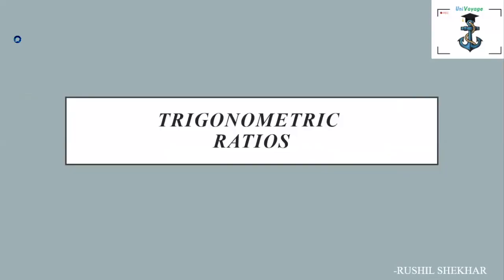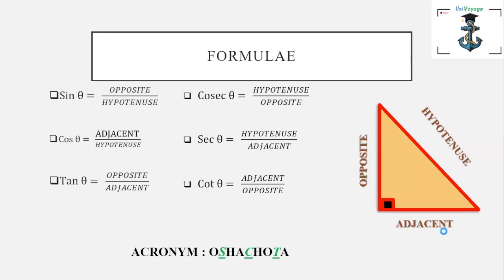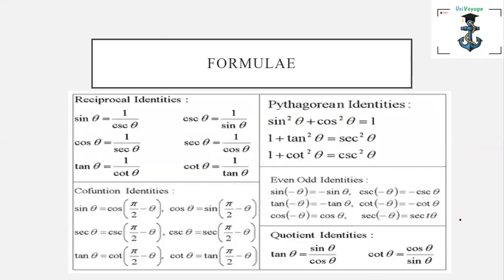Hello everyone, welcome to Univoj. This is Roshul Shekhar and today we are going to solve some sums based on trigonometric ratios. Before starting with the sums, we need to note down some formulas — you can pause the video and take a screenshot. You can remember these formulae by the acronym OSA CHOTA, where S stands for sine, C stands for cos, and T stands for tan. All these formulae are very important, so make sure you make a note of these.